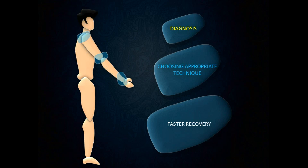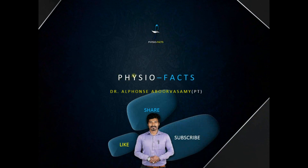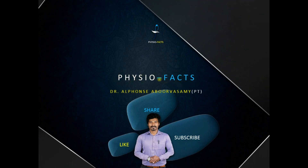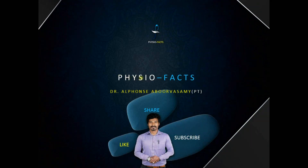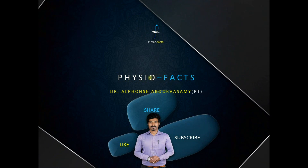By knowing the capsular pattern of restrictions of different joints, it will enable us to perform effective differential diagnosis, arrive at an accurate diagnosis, choose an appropriate treatment technique apt for that particular condition, aiding in faster recovery and saving time. So far we were discussing about the capsular pattern of restriction. I hope it has been informative — thank you for watching this video, please do subscribe and share with your friends.